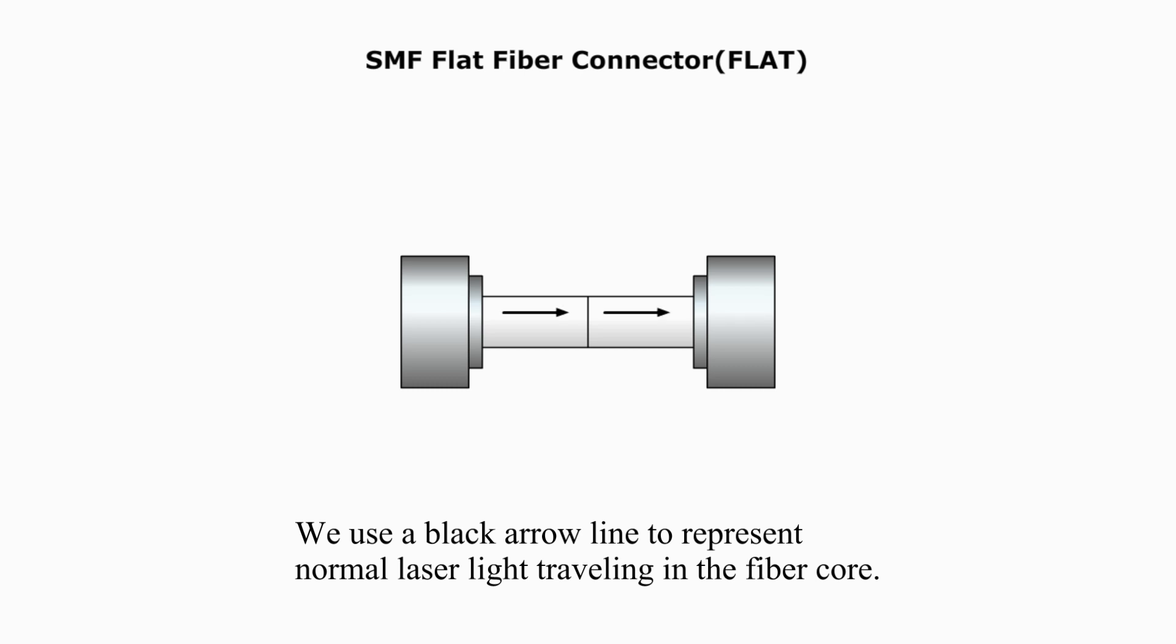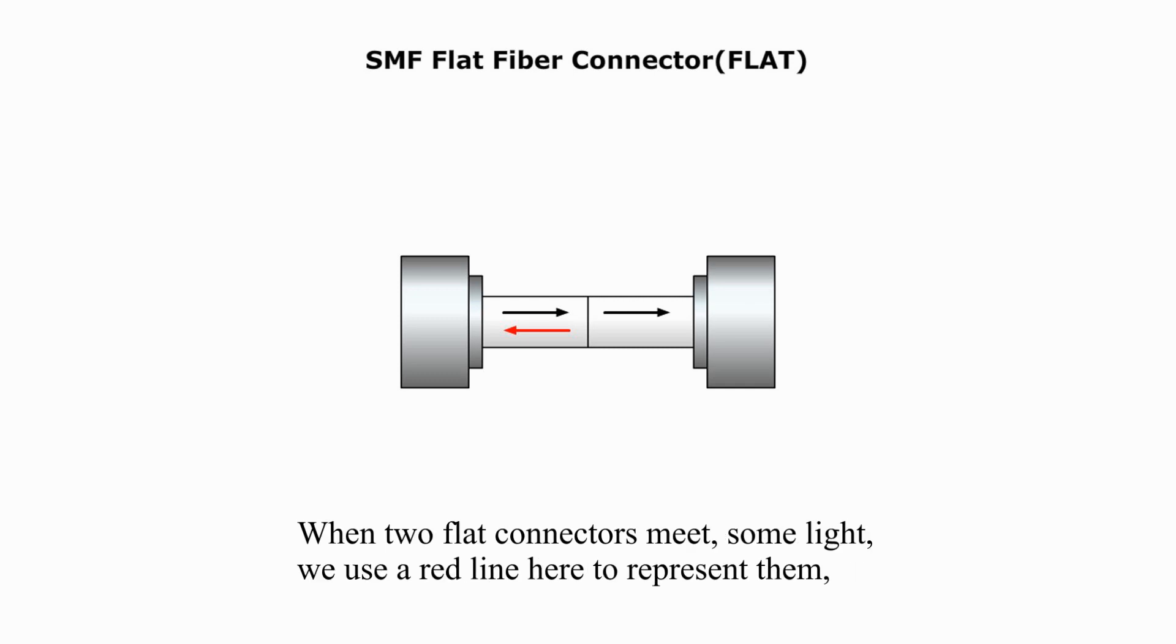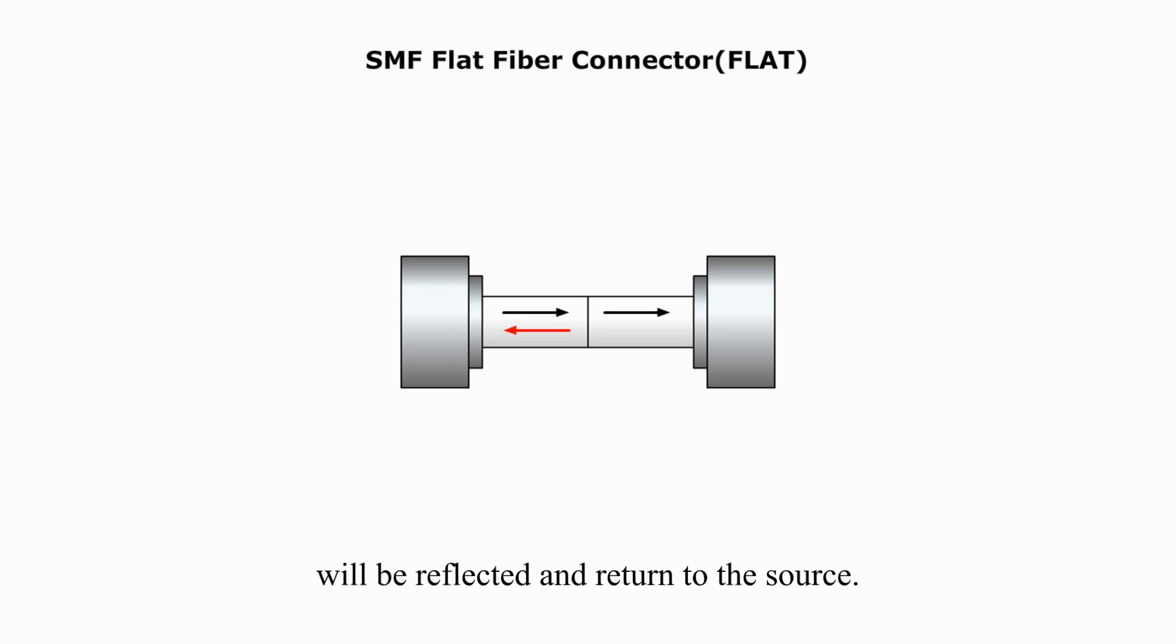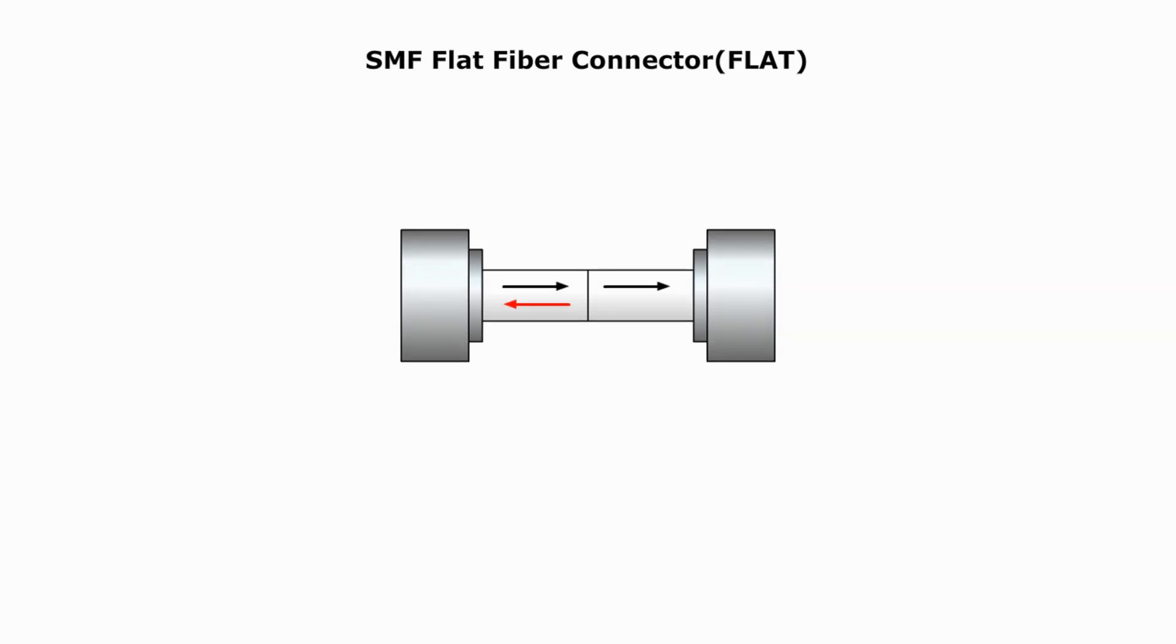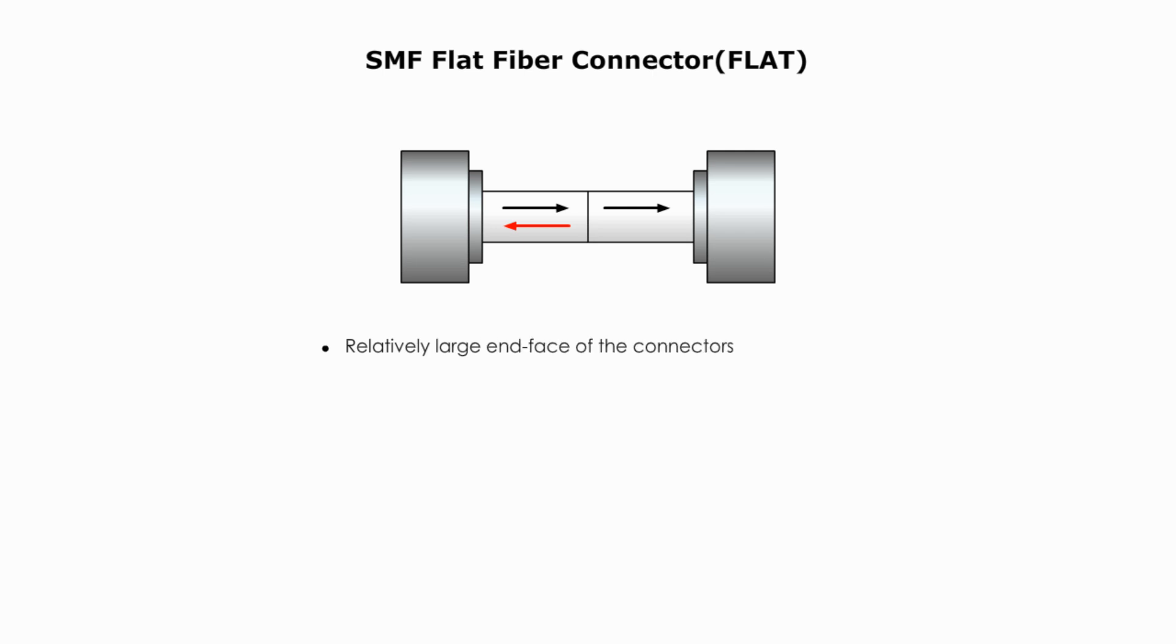We use black arrow line to represent a normal laser light traveling in the fiber core. When two flat connectors meet, some light, we use a red line here to represent them, will be reflected and return to the source. We can see flat connector has a relatively large interface, thus possibly leaving a small air gap between two connected fiber connectors, thus resulting in more return loss.